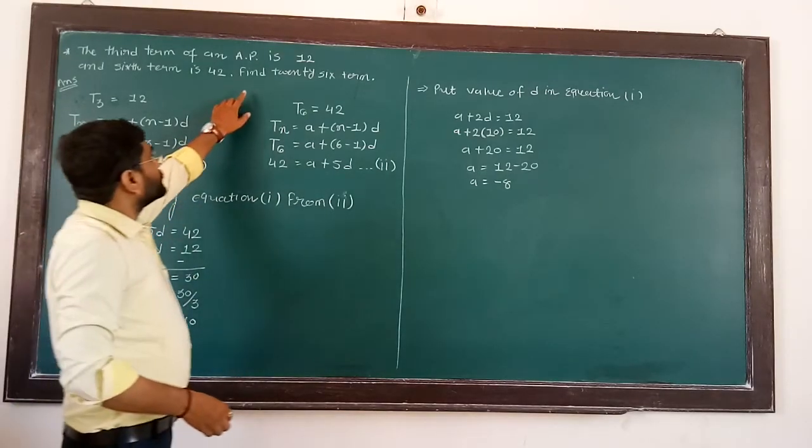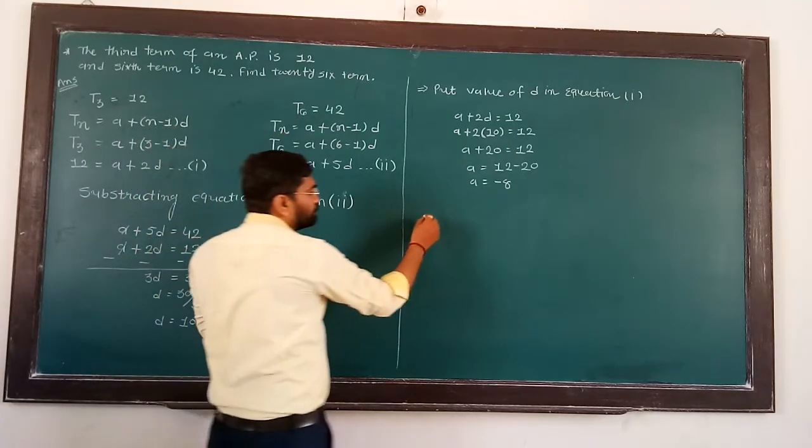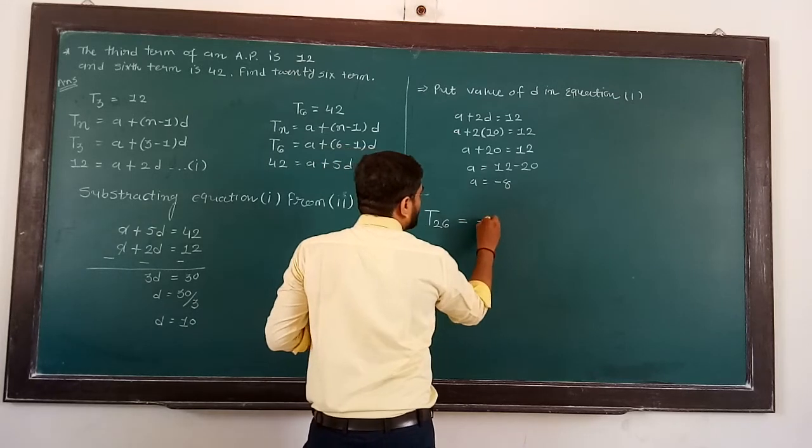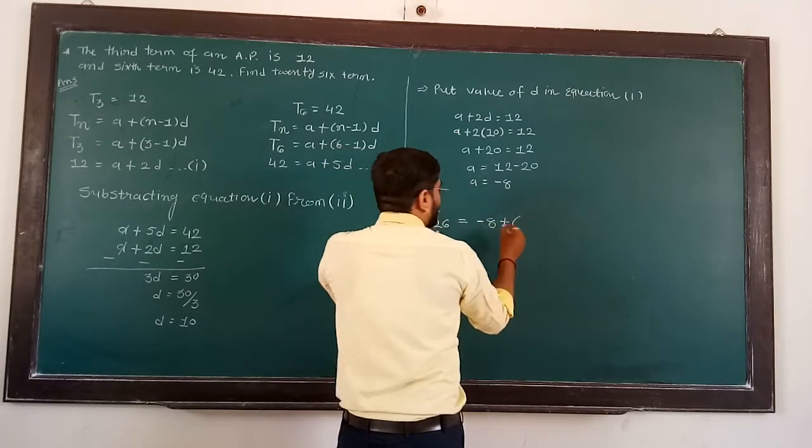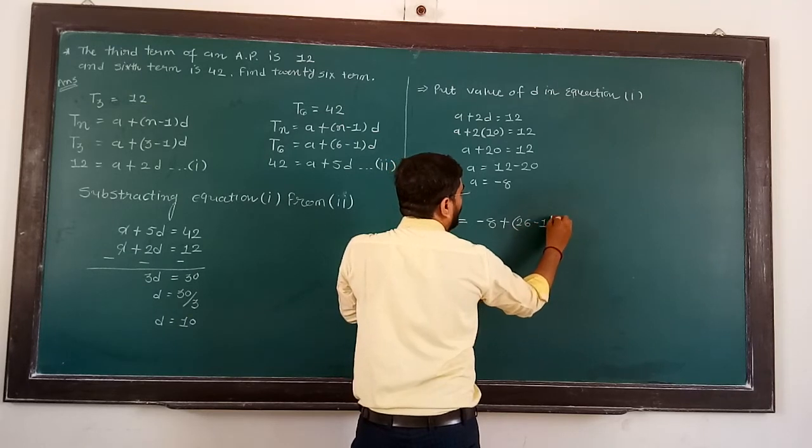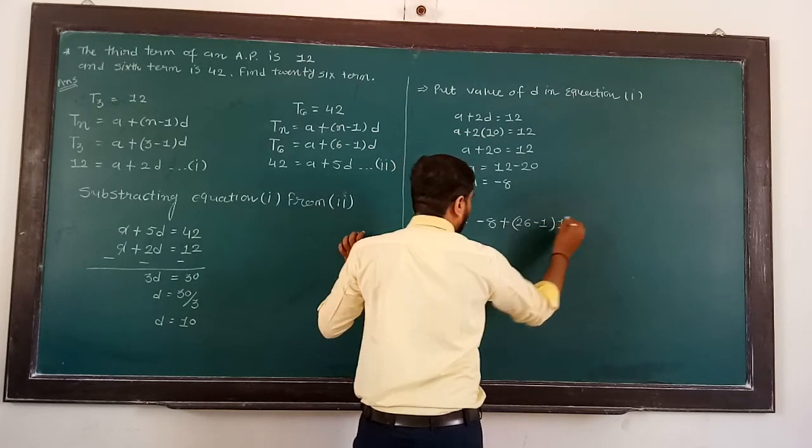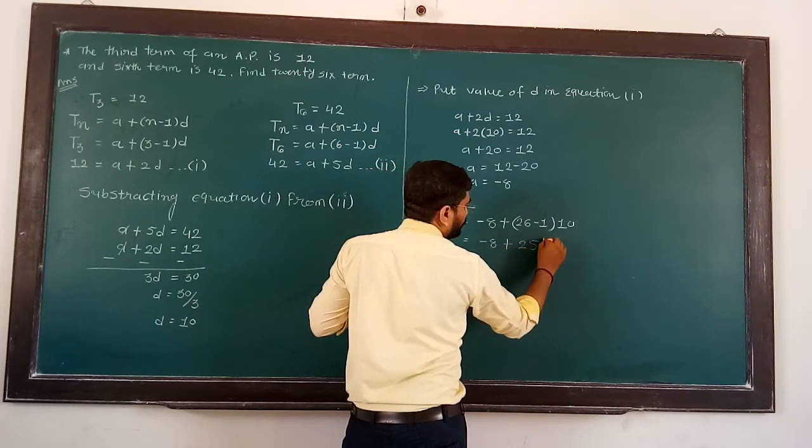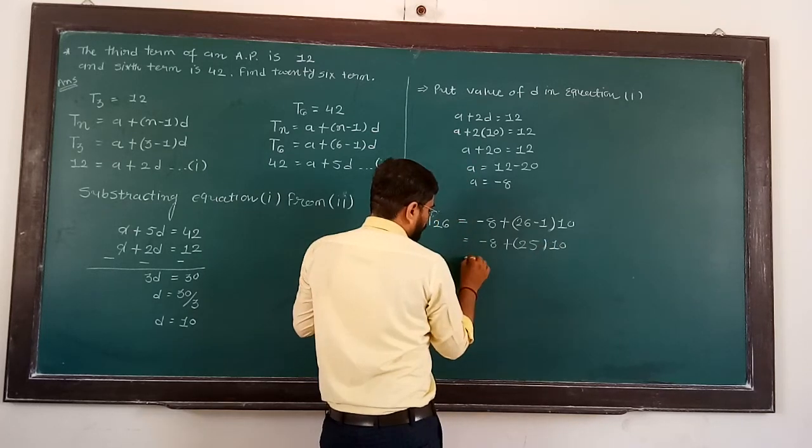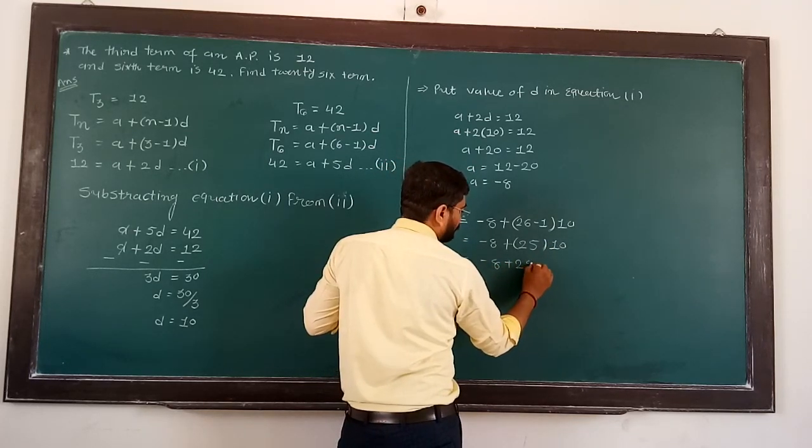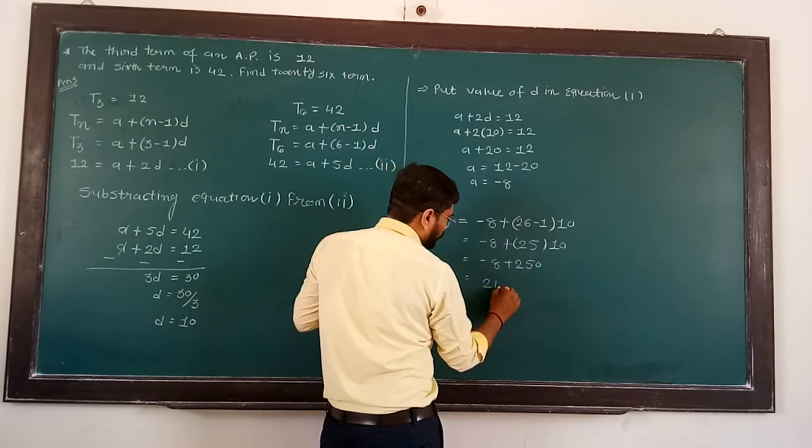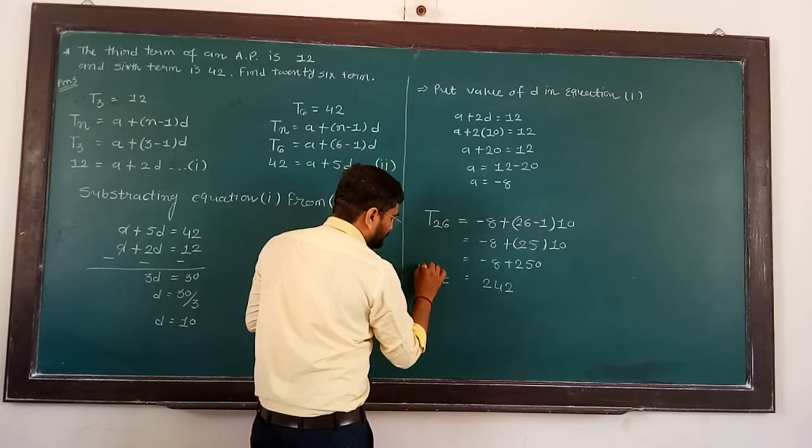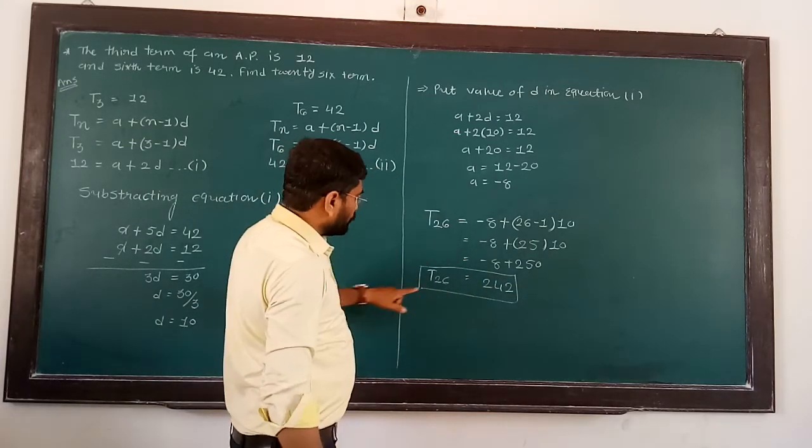Now in the last question we have to find the 26th term. So we write here T26, A means minus 8 plus 26 minus 1, and D is 10. So minus 8 plus 25 into 10, minus 8 plus 250, so we write here 242. T26 is equal to 242.